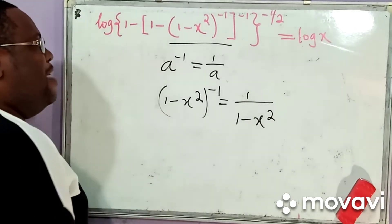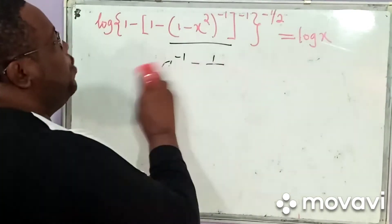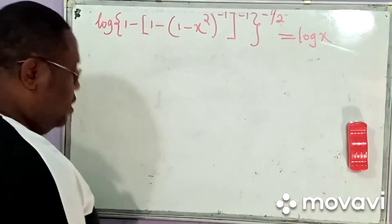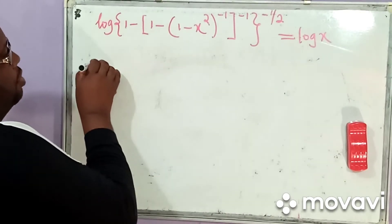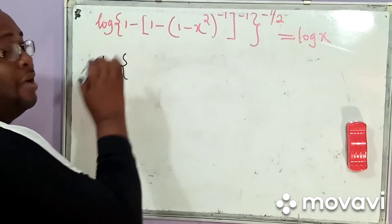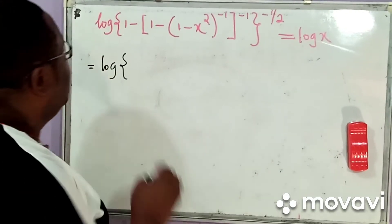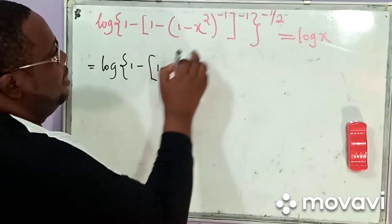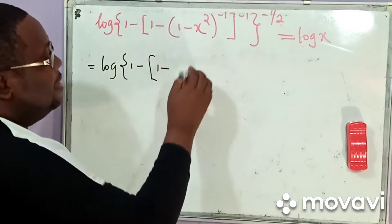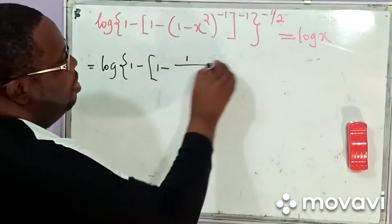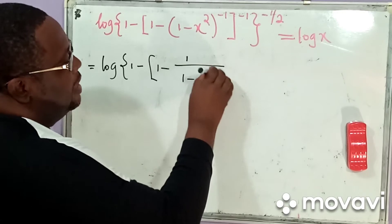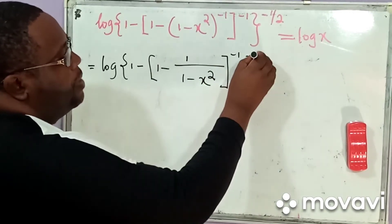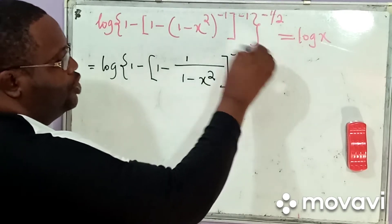So if we know that, we can simply say this is going to now be equal to the logarithm — opening a bracket — then having 1 minus, and then this simply becomes 1 all over 1 minus x squared, now raised to the power negative 1 and raised to the power negative 1 over 2.